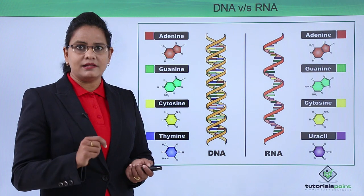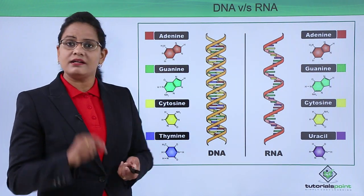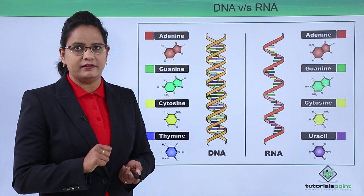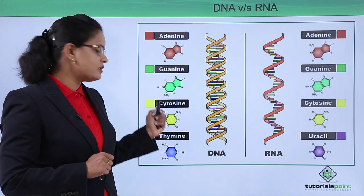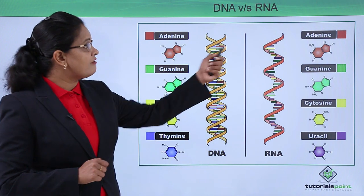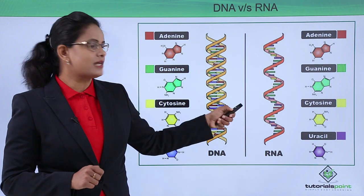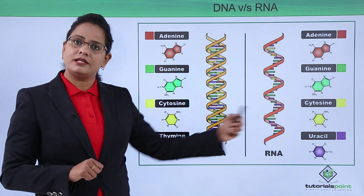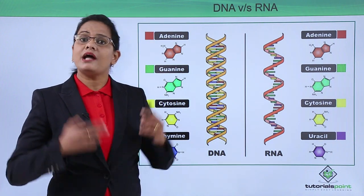DNA is double helical and double stranded, while RNA is single stranded but helical. Regarding nitrogenous bases, DNA contains adenine, guanine, cytosine, and thymine, whereas RNA contains adenine, guanine, and cytosine, but in place of thymine, uracil is present.